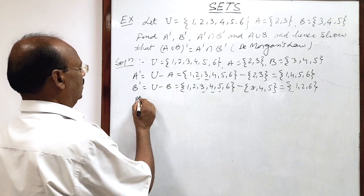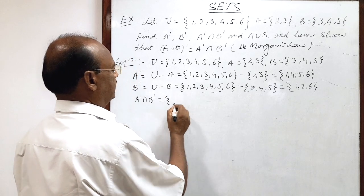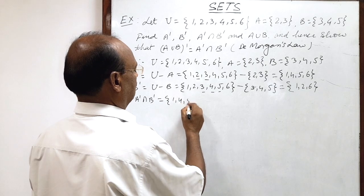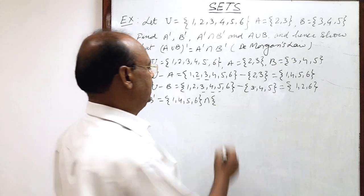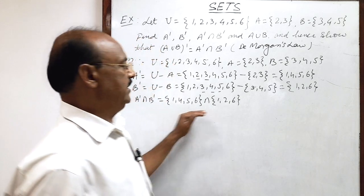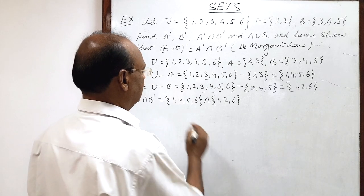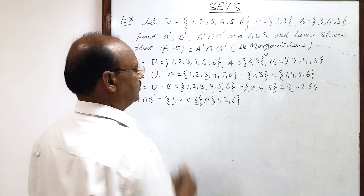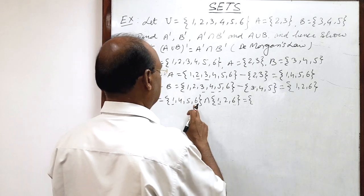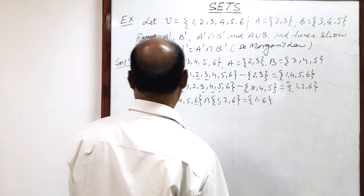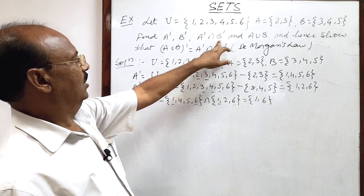Now let us find A complement intersection B complement. We have A complement as {1, 4, 5, 6} and B complement as {1, 2, 6}. To find the intersection, we collect the common elements from both sets. The common elements are 1 and 6, so A complement intersection B complement equals {1, 6}.